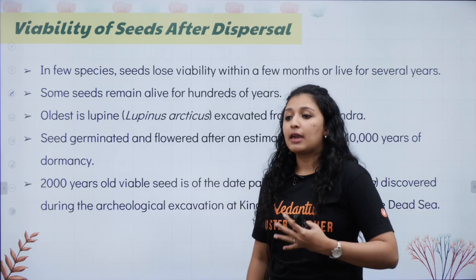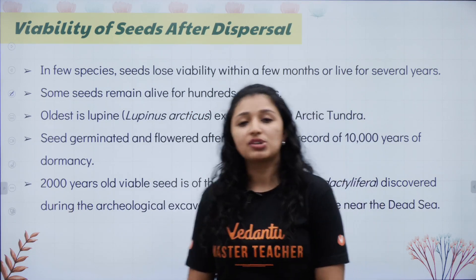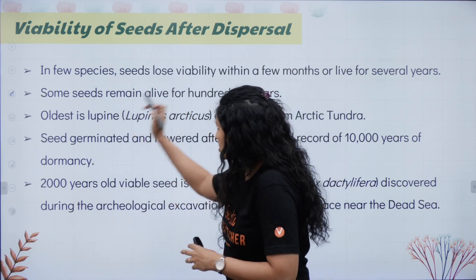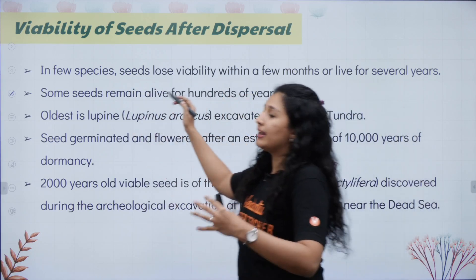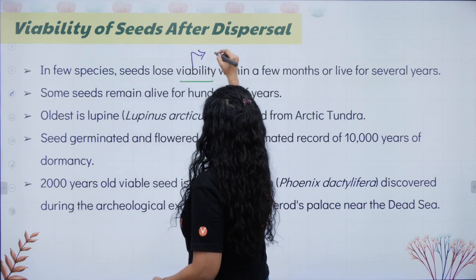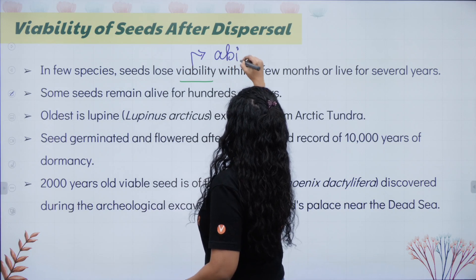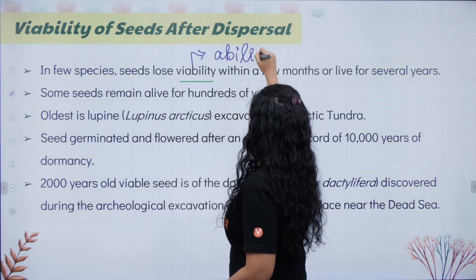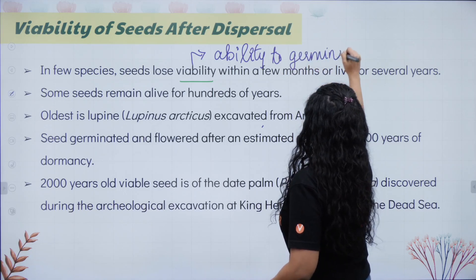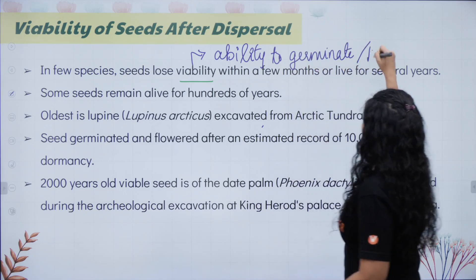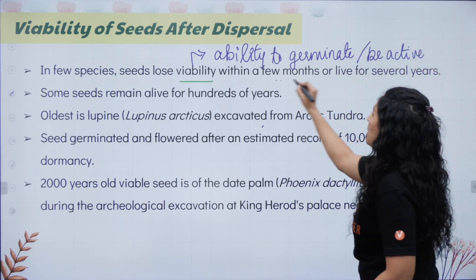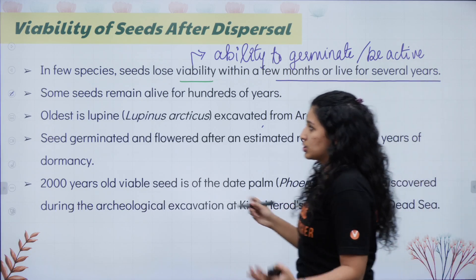Seed viability refers to the ability of a seed to germinate and be active. Viability varies — in some species seeds lose viability within a few months, while in others they can remain viable for several years. The oldest example is lupine — Lupinus arcticus.